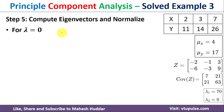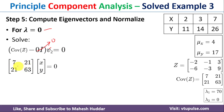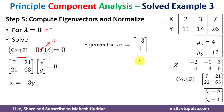For the second eigenvector, we use λ = 0: Cov(Z) × v₂ = 0. This gives [[7, 21], [21, 63]] × [x, y] = 0. From the first row: 7x + 21y = 0. Setting y = 1, we get x = −3. So the second eigenvector v₂ = [−3, 1].